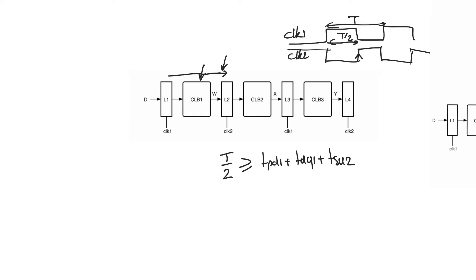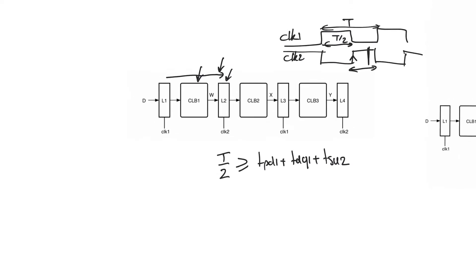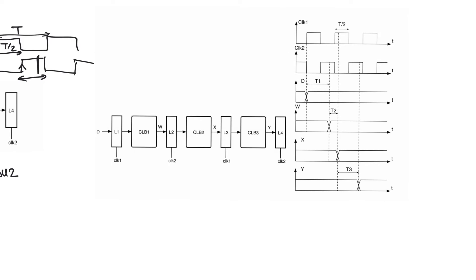The data actually doesn't need to arrive at the rising edge of clock 2. It needs to arrive any time within the high phase of clock 2, and L2 will still latch it as long as it arrives a Tsetup time before the falling edge of the clock. Looking at this waveform with nodes D, W, and X: when D changes, data exits through L1 taking Tdq1, then propagates through CLB1 taking Tpd1, and should arrive at W not at the rising edge of clock 2 but anytime within the high phase of clock 2 and before Tsetup before clock 2 ends.